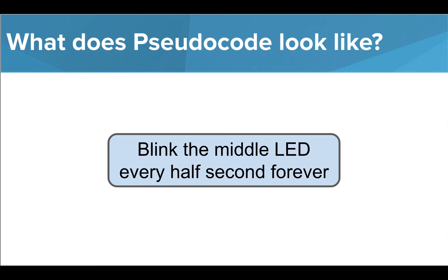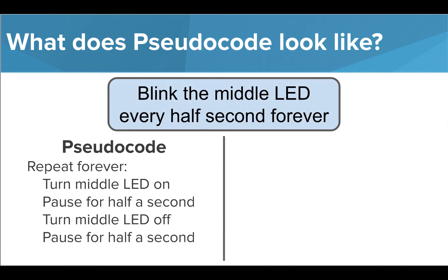Let's say our task was to blink the middle LED on our microbit every half a second forever. Our pseudocode might look something like this, where we are breaking the problem into steps, but just writing every step in plain English.